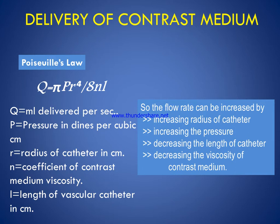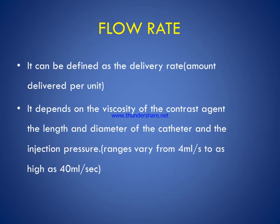There is a formula called Poiseuille's Law which is useful for contrast medium delivery: Q equals pi times P times r to the power of 4, divided by 8 times n times l. Here Q denotes delivery per second, P denotes pressure in dynes per cubic centimeter, r is the radius of the catheter, n is the coefficient of contrast medium viscosity, and l is the length of the vascular catheter in centimeters.